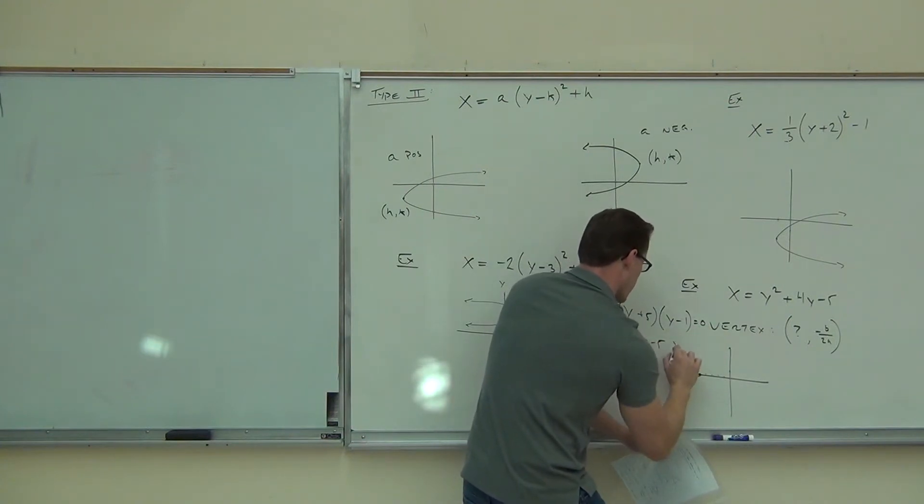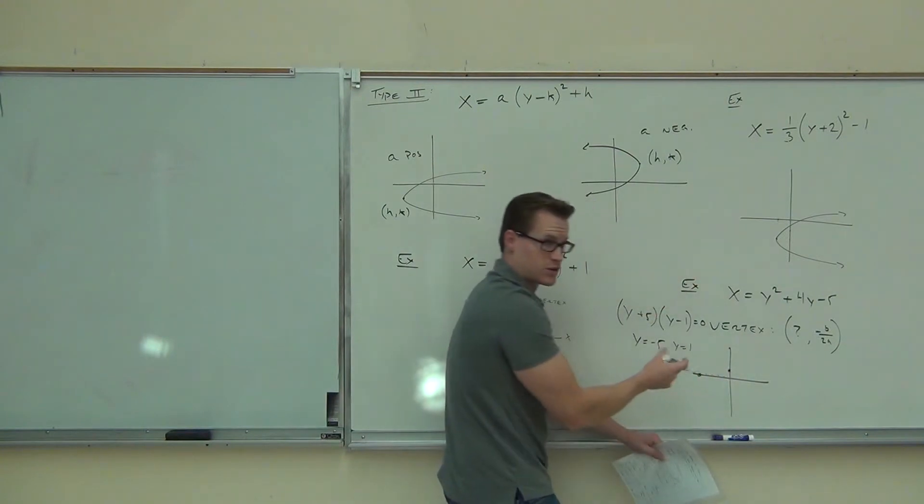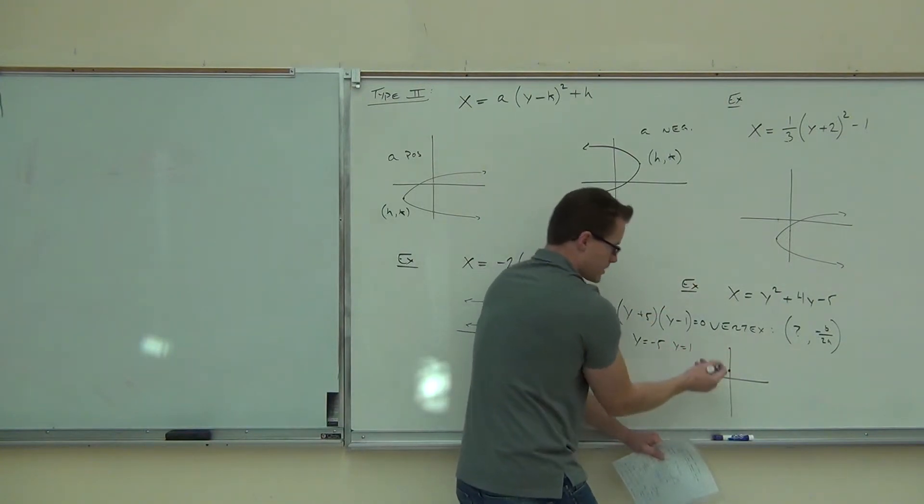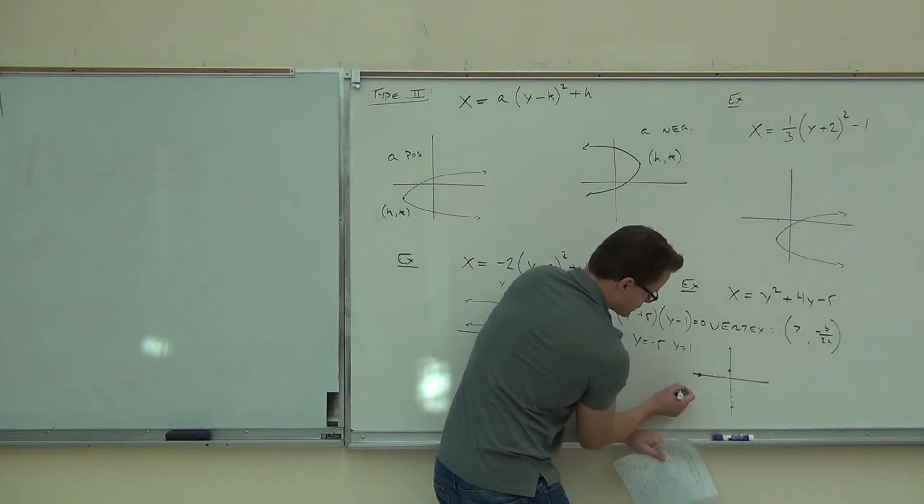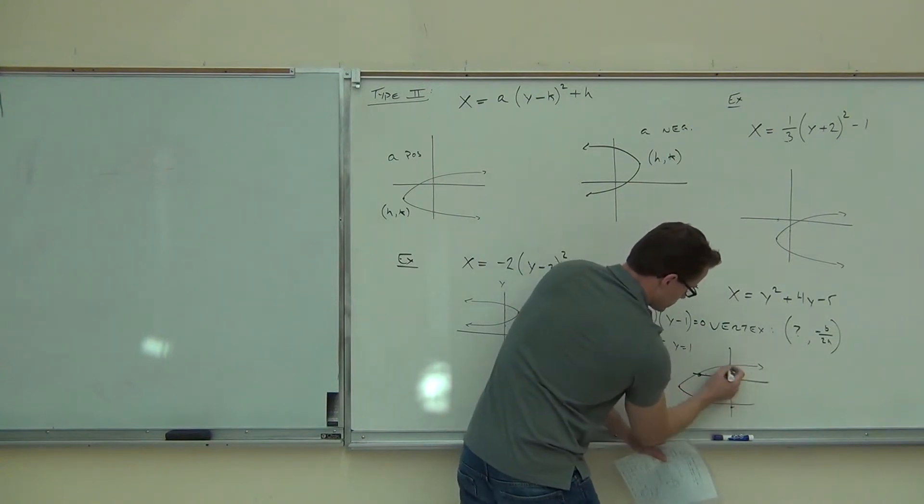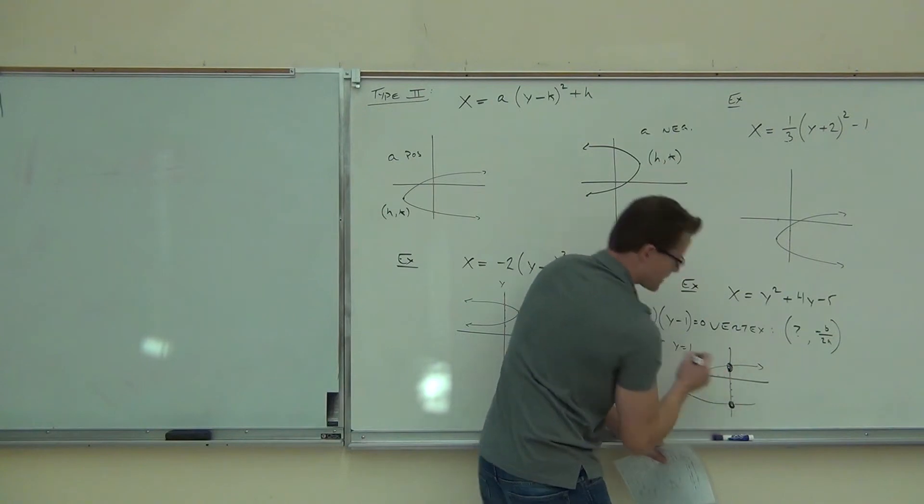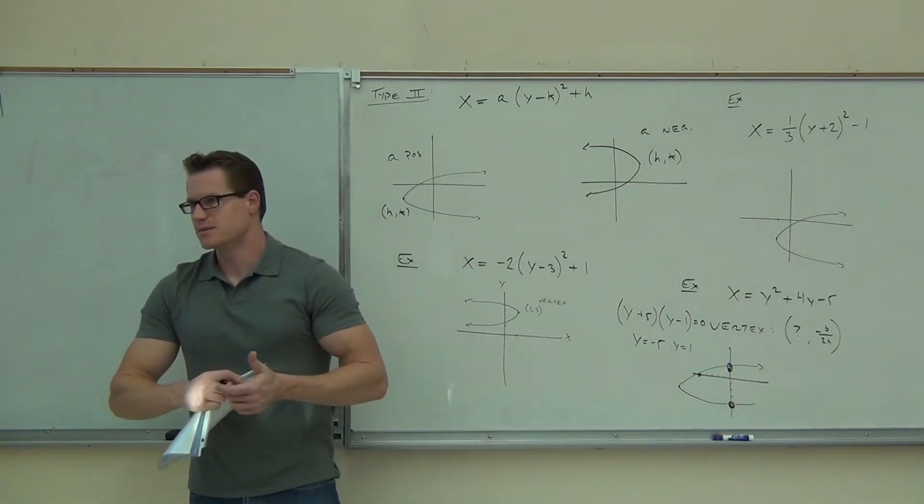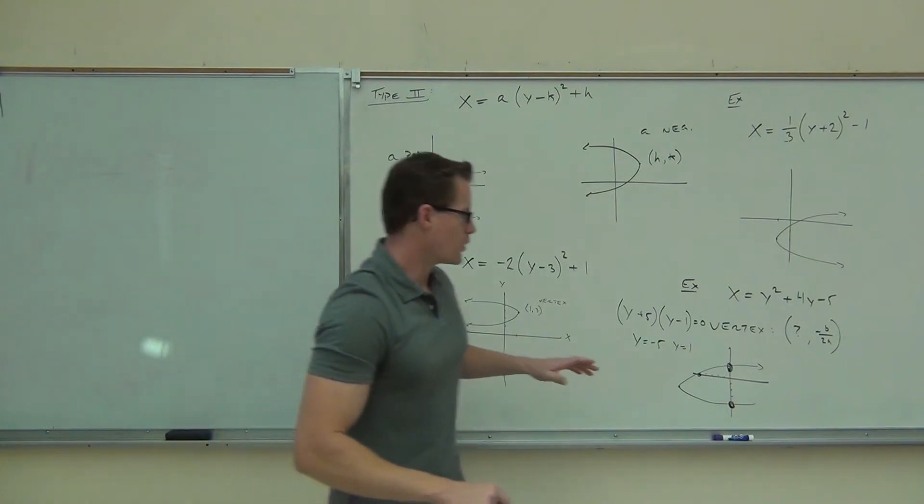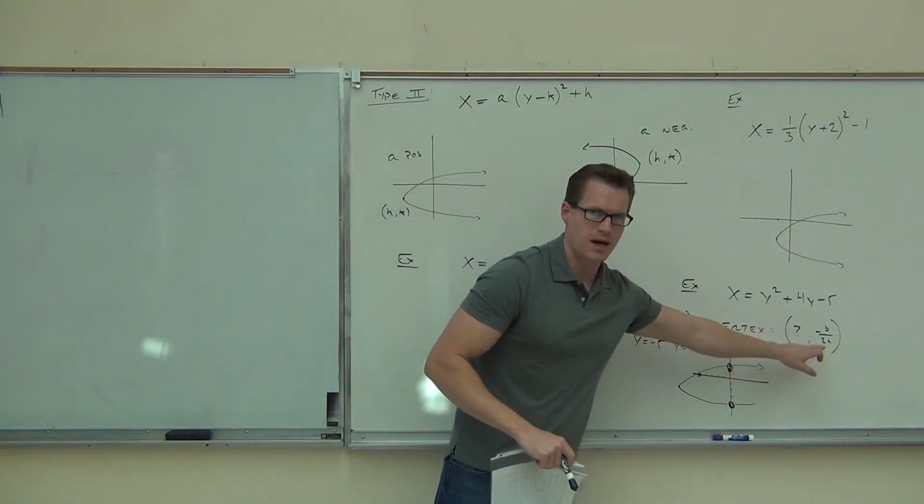y equals negative 5 and y equals 1. So we have y equals 1 right here. It's weird, right? Because y is positive up this way. And then you'd find your vertex. Your vertex would be somewhere around there. Let's make those bigger. There we go. But that's the basic idea. So try that out on your own. The only one I didn't do is the vertex, but I think you guys can handle that.